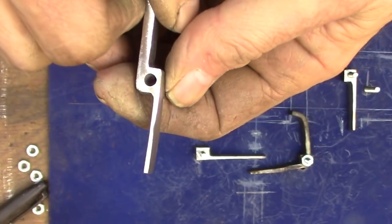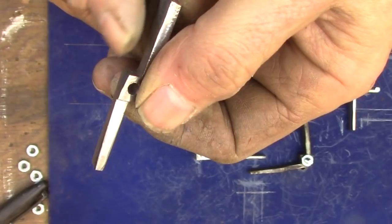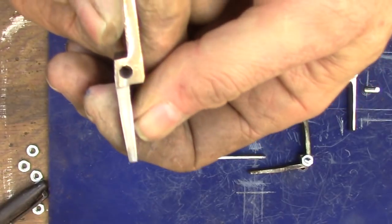And here you can see again how changing that cross section really lightens up the appearance of this piece without compromising the strength.